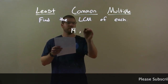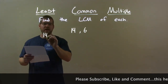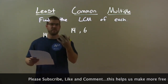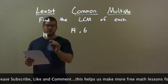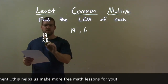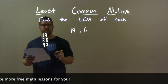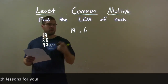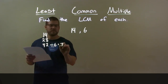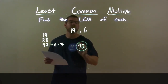14 and 6. I take the largest number, 14, and go through each multiple to see which one is divisible by 6. 6 doesn't go into 14. So then we have 28. Does 6 go into 28? No. But 42 is the next multiple of 14. 6 goes into 42, 7 times evenly. So my answer here is just 42.